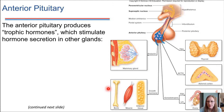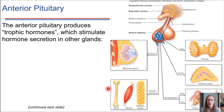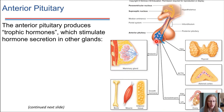The hormones that the anterior pituitary produces are referred to as trophic hormones. The word trophic means to feed. What these hormones do — if they're present in high concentrations throughout the body — is cause their target organs to grow, to hypertrophy. If they're present in low concentrations, conversely, the target organs will start to atrophy. So collectively these are referred to as trophic hormones. We're going to walk through five of the major hormones that the anterior pituitary secretes, as listed in this figure, and we'll go through them one by one.